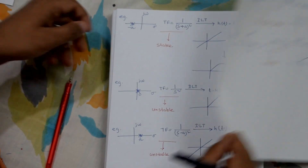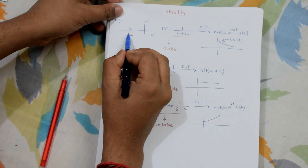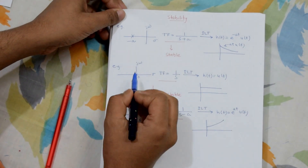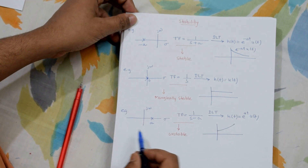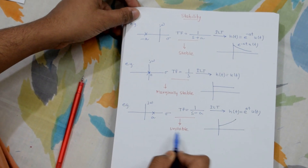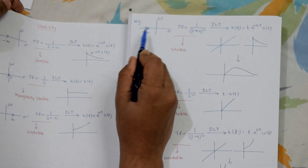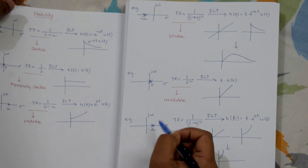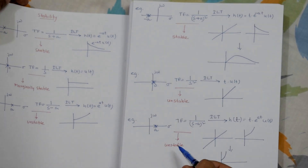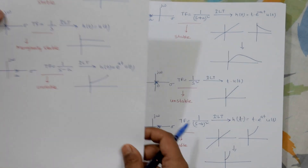Up to here we saw that if the pole is on the left side it is stable; if the pole is on the jω axis it is marginally stable; and if the pole is on the right side it is unstable. For repeated poles, if the pole is on the left-hand side then it is stable; if it is on the jω axis or on the right-hand side it is unstable.